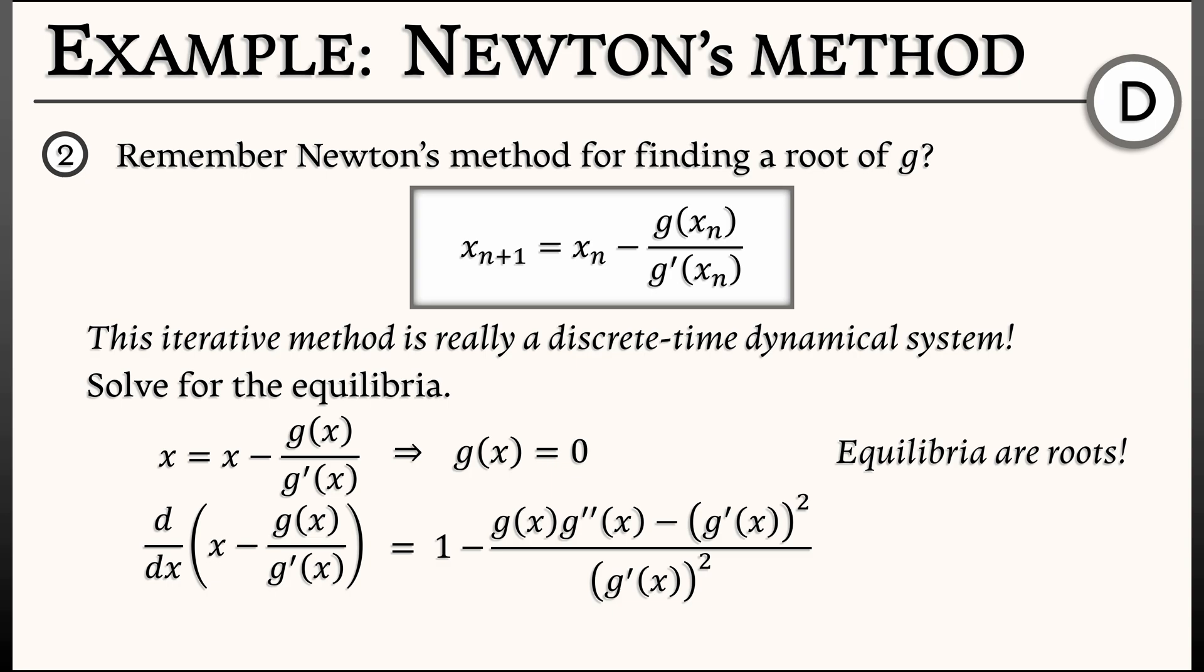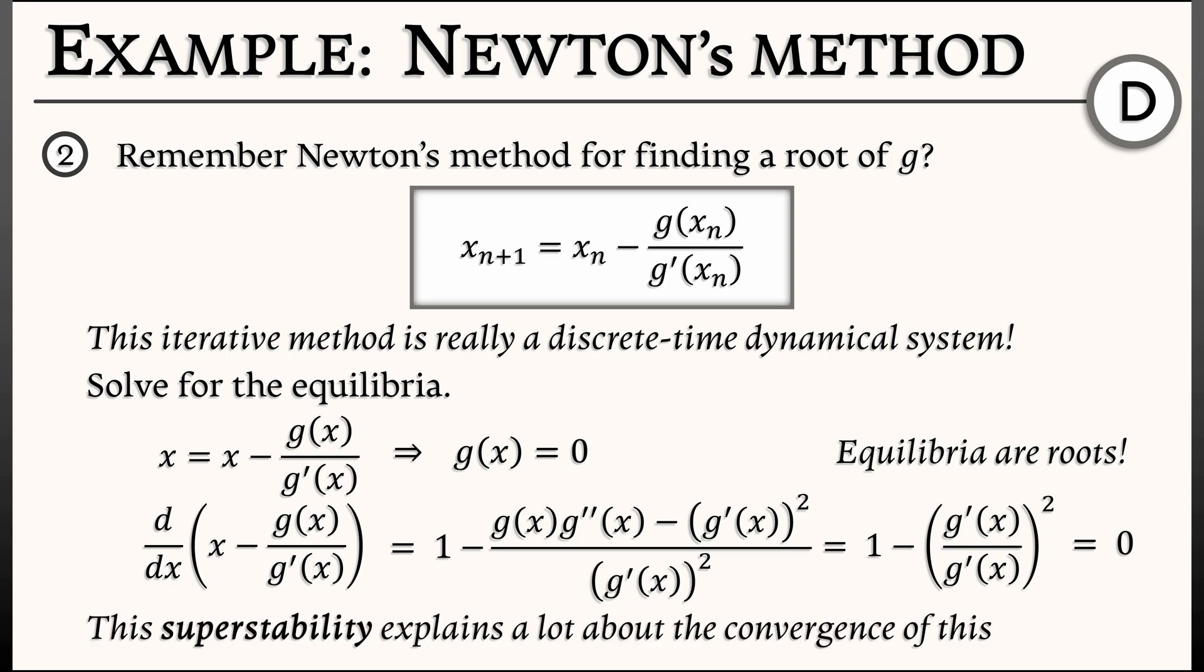Now because g(x) is zero, because that's a root of g, what I get is 1 - g'/g'². That's 1 - 1. That's zero. And that means not only are these equilibria stable, they're really stable. They're super stable. And this super stability explains a lot about the convergence of Newton's method.